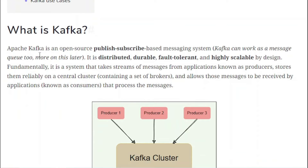Apache Kafka is an open-source publish-subscribe based messaging system. As defined in the last tutorial, there are two types of messaging systems: queue messaging and publish-subscribe messaging. Kafka is an example of the publish-subscribe based messaging system. Kafka can also work as a message queue with the proper configuration, which we will see later in this tutorial.